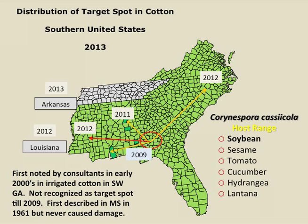This slide illustrates the spread of target spot over the past five years across the Southeastern and Mid-Atlantic cotton production regions. Disease outbreaks originated in southwest Georgia in the mid-2000s, and the disease subsequently spread statewide throughout Alabama by 2011, into the Mid-Atlantic states and Louisiana in 2012, and into Arkansas in 2013.